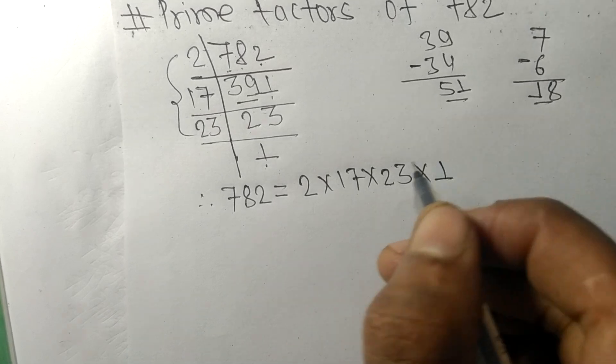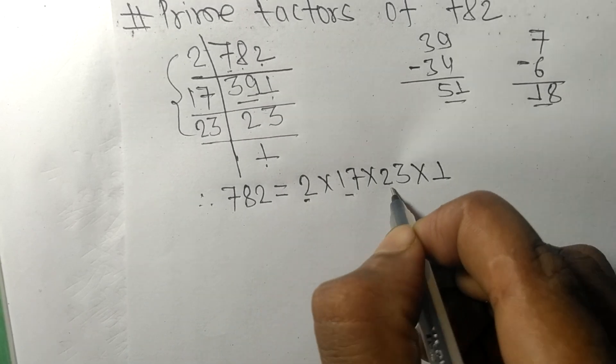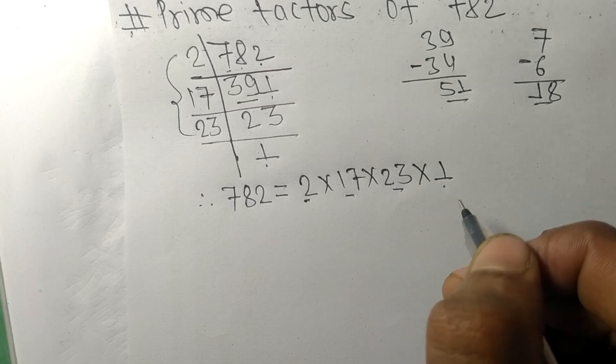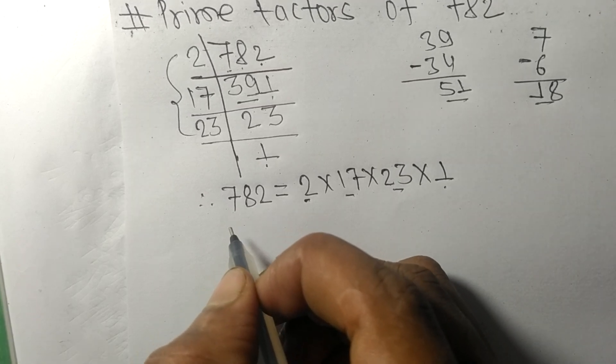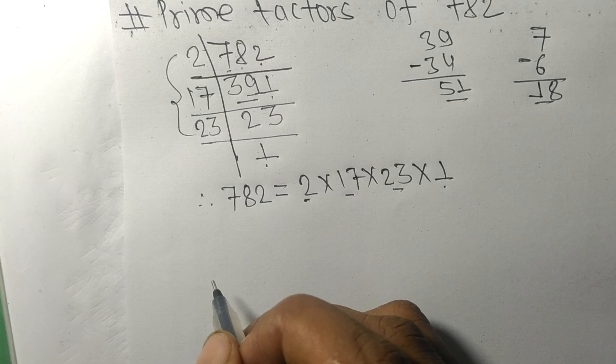So 2, 17, 23, and 1 are the prime factors of 782. This much for today, and thanks for watching.